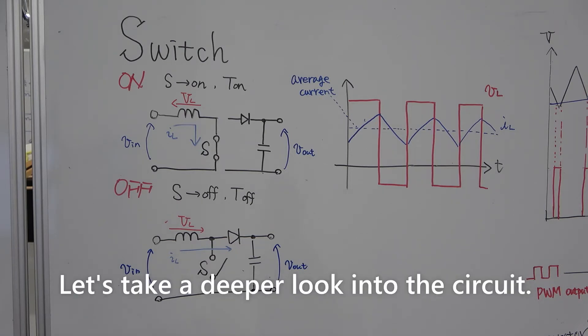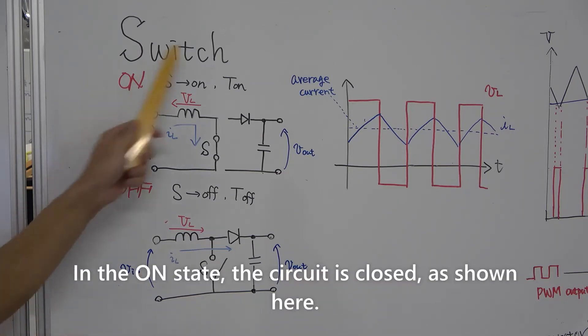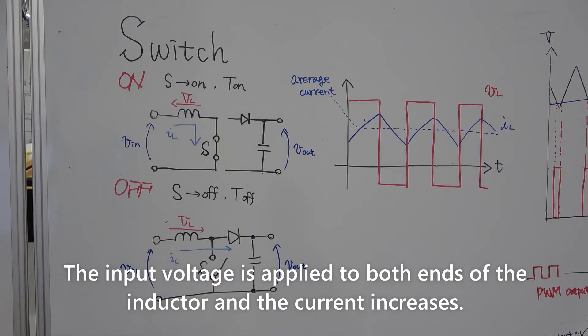Let's take a deeper look into the circuit. The circuit has an on state and an off state, depending on the switch. In the on state, the circuit is closed, as shown here. The input voltage is applied to both ends of the inductor and the current increases.